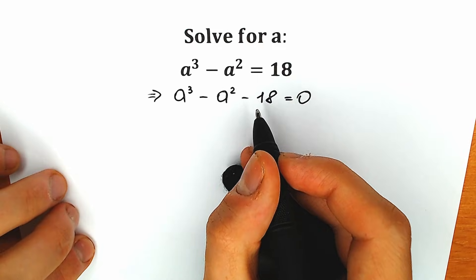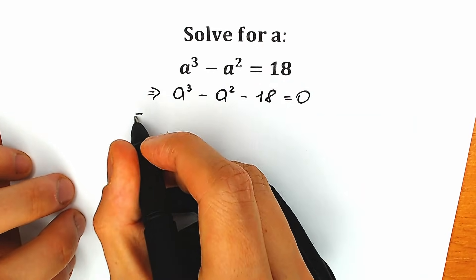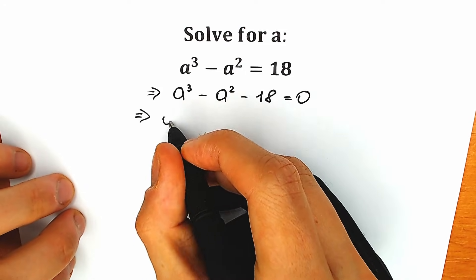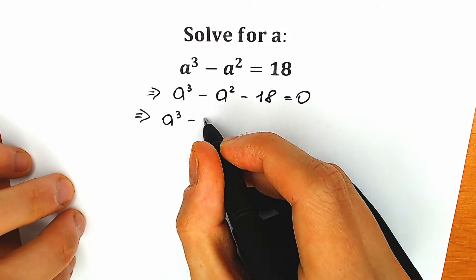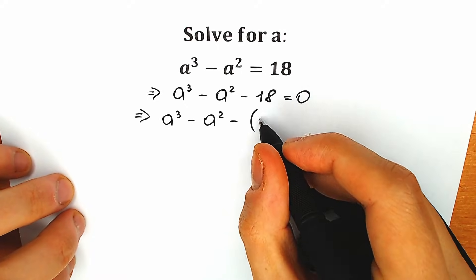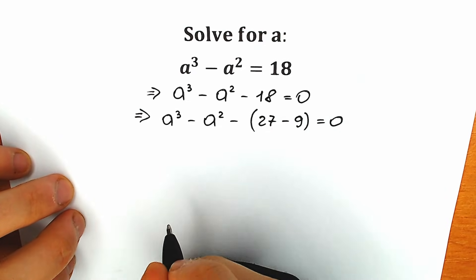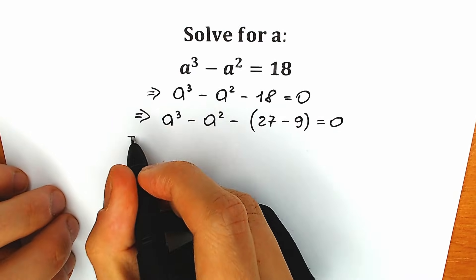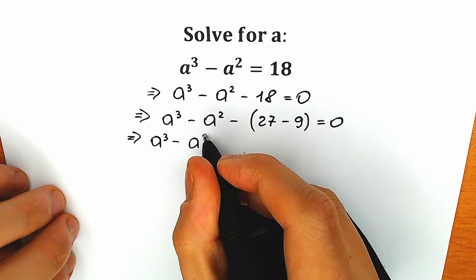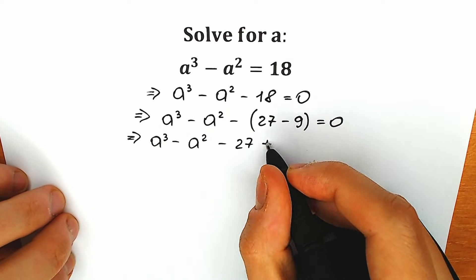First of all, instead of this 18, let's write 27 minus 9. A lot of students may be asking why we choose this expression 27 minus 9 — just wait a few seconds. So we have a³ minus a² minus 27 minus 9, which gives us a³ minus a² minus 27 plus 9, equal to zero.